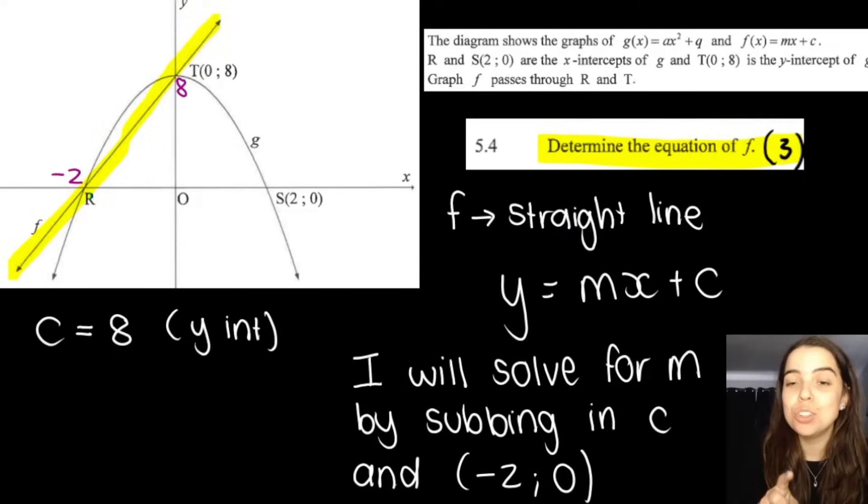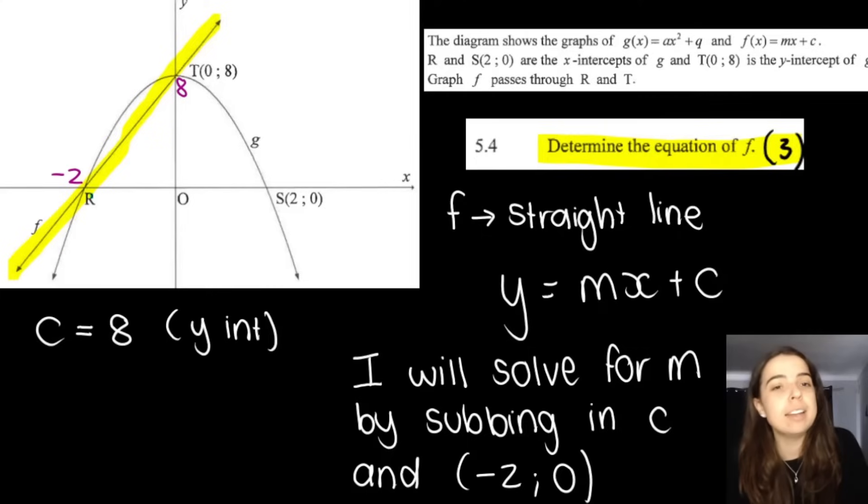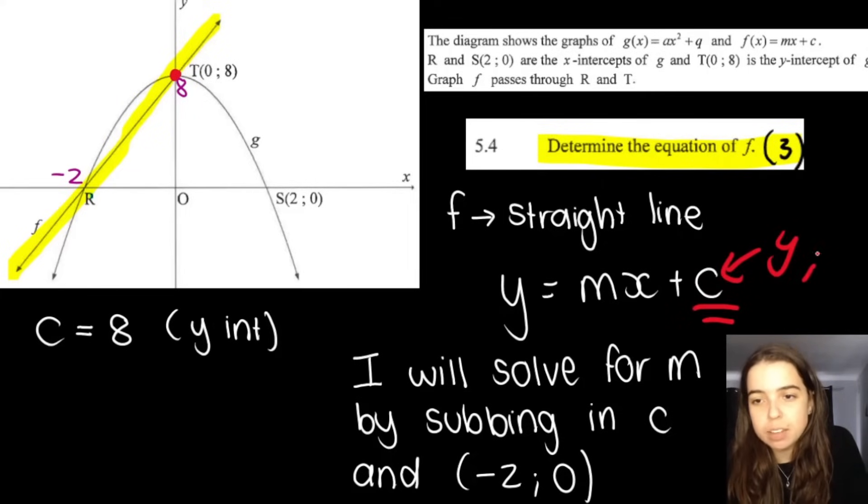The next question asks us to determine the equation of f. We know that f is our straight line function, our linear function, and we know that it has the equation in the form of y equals mx plus c. Another thing that we know by looking at the graphs is that we know the y-intercept of our function f. The y-intercept, in other words where the straight line cuts the y-axis, is also at 8. So we know that c is 8.